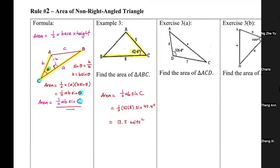Now SS3A and SS3B, try to do it yourselves. SS3A, you have 13.4; SS3B, you have 19.7.